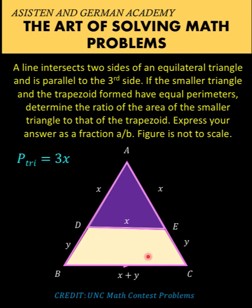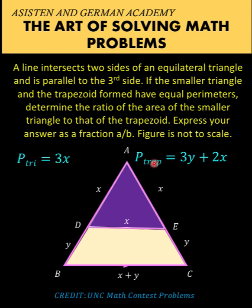Now looking at this trapezoid at the bottom, its perimeter would be X plus Y plus X plus Y plus Y, and simplifying, the perimeter of the trapezoid is 3Y plus 2X.